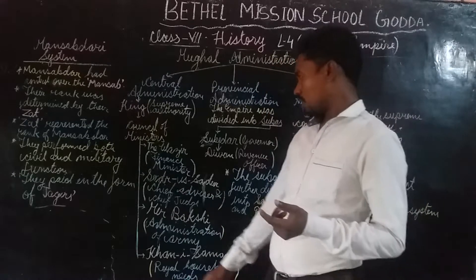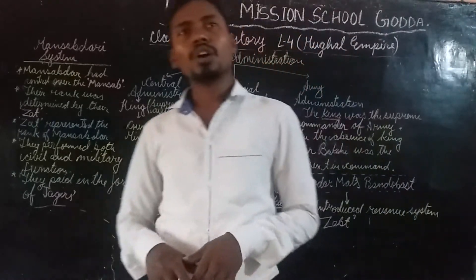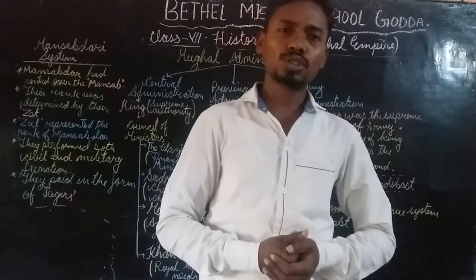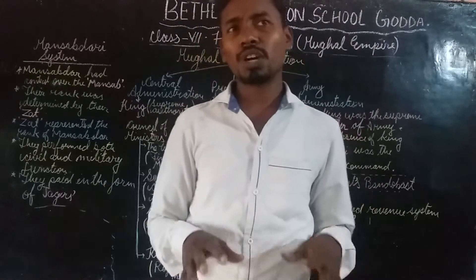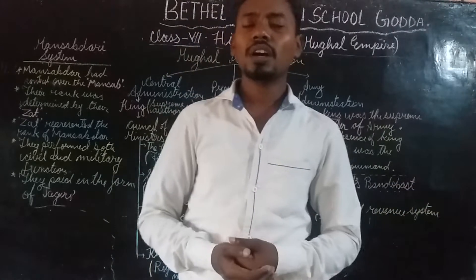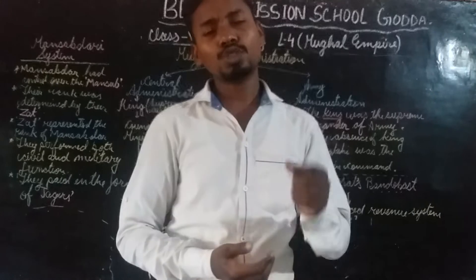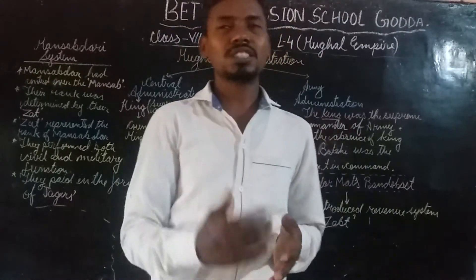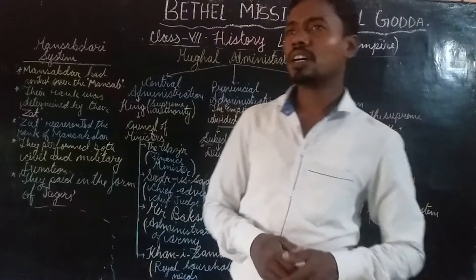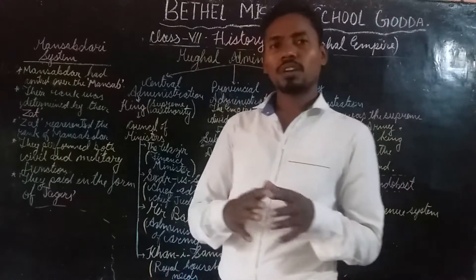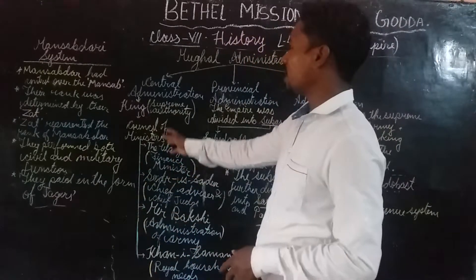Then we have one more minister called Khan-i-Saman. These royal families had very luxurious lives in those times, and it required a quite good amount of raw materials and finished goods for so many members of the royal family. It was such a troublesome job that the king had to appoint a minister to look after the household requirements and needs of the royal house. These were some of the important council of ministers in the central administration.